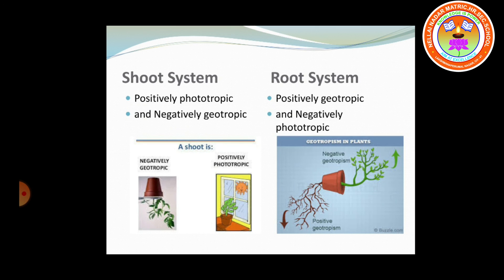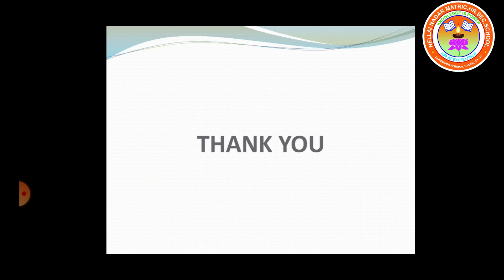The root system is called positively geotropic because roots always grow towards gravity. Roots do not grow towards sunlight, so we call them negatively phototropic. In summary, the root system is positively geotropic and negatively phototropic. That covers all the tropic movements in plants. Thank you.